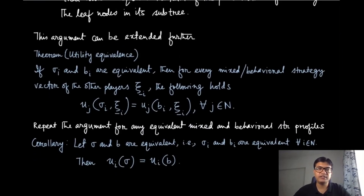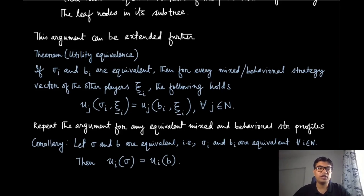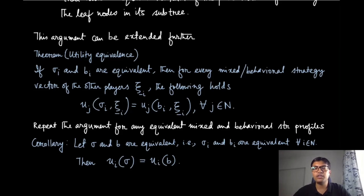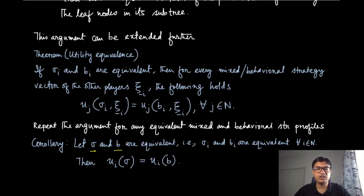This argument can be extended further to utility equivalence: if two strategies — one mixed and one behavioral — are equivalent, then for every mixed or behavioral strategy vector of the other players xi_{-i}, the utilities are also the same. This utility equivalence is a byproduct of the equivalence between behavioral and mixed strategies. Furthermore, if for all players the corresponding sigma_i and b_i are equivalent, then the utility at the mixed strategy profile and the behavioral strategy profile are also the same.